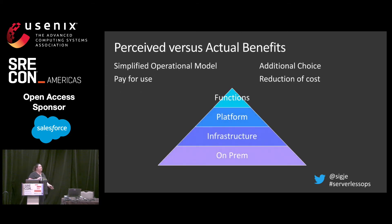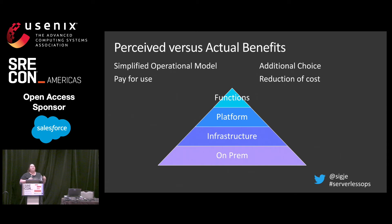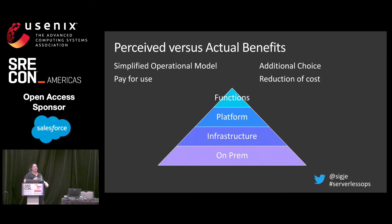If I think about the perceived benefits versus the actual benefits — we talk about getting a simplified operational model and paying for use with serverless. But what I perceive is that we get this additional choice. If I look at on-prem hardware, infrastructure as a service, platform as a service, and functions as a service, I'm basically saying that as I go up the stack, I'm decreasing my operational burden. There are specific elements I no longer have to worry about. As an ops person, that's fantastic — I was so happy when I didn't have to go into the data center and rack and stack anymore. But as I go up the stack and reduce my operational burden, I'm also increasing the complexity of understanding what's going on in the system. I can be strategic about what I'm spending money on and reduce my costs, but only if I'm increasing my visibility.